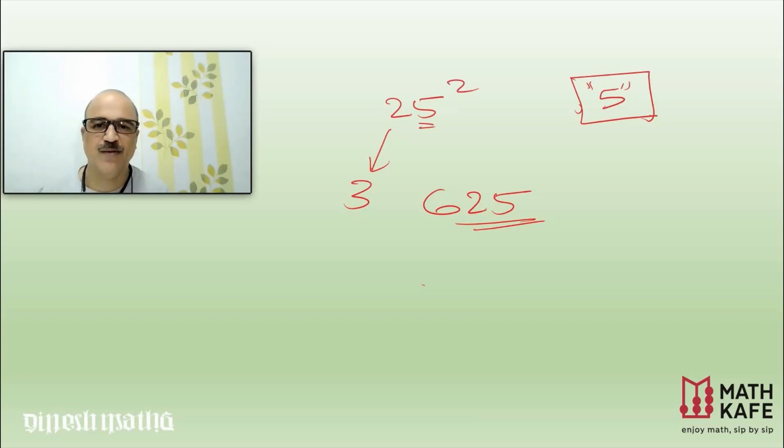You don't want to write 25 times 25, multiply with the 5 first then with the 2, add, complete it. Nothing is required - just straight away take the first number, multiply with the next number, and 5 square is always 25. Let us consider the second example, 45 square.